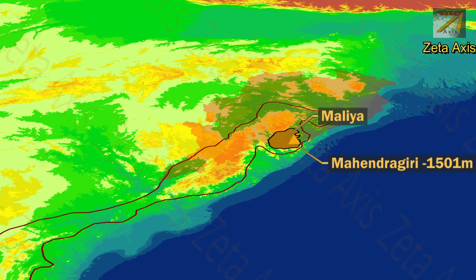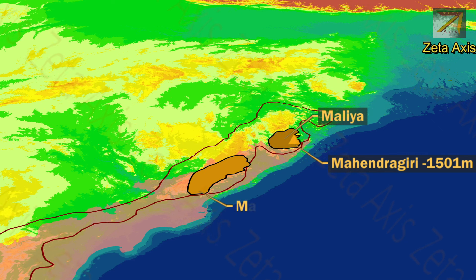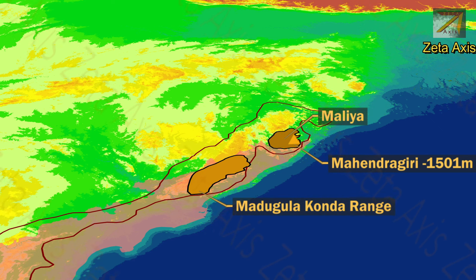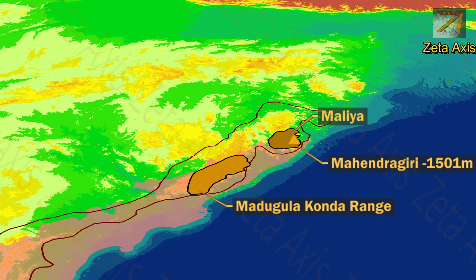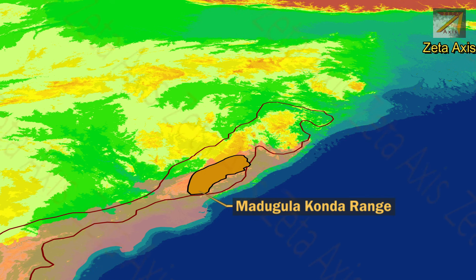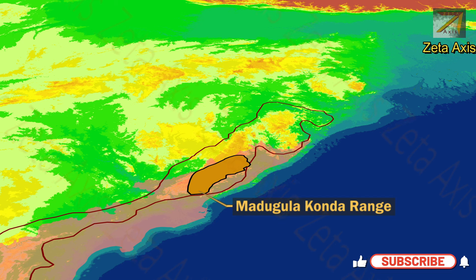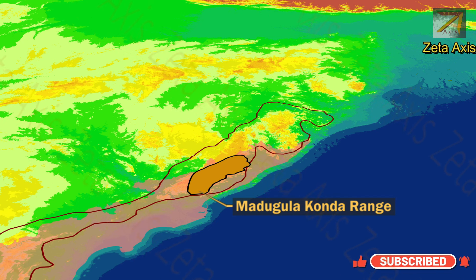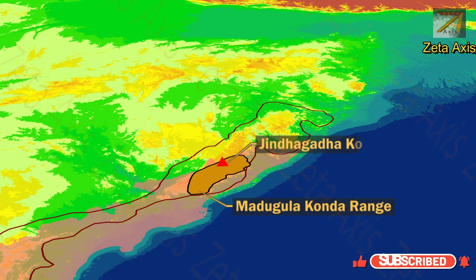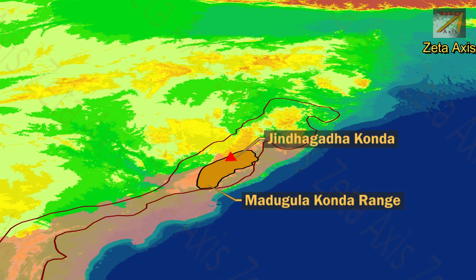The second important range in this region is the Madugula Konda range. It is also located in the northern portion of the Eastern Ghats and is higher than the Malia range, generally ranging between 1100 to 1400 meters high. The Madugula Konda range contains Jindagada Peak, which is the highest peak of the Eastern Ghats.